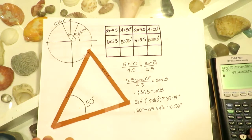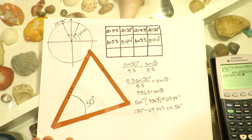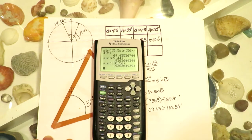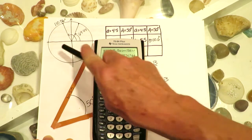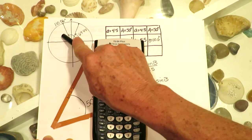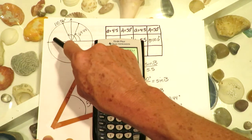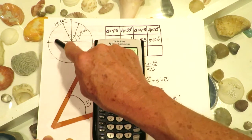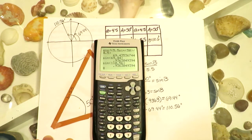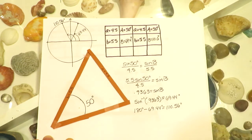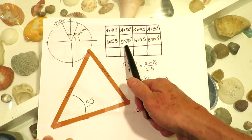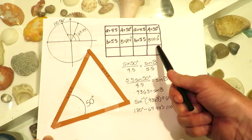Sine of 69.44 is equal to sine of 110.56 — notice we get the same value for sine for both of those angles. Where I obtained 110.56: take a half circle, or 180 degrees, and subtract the first answer to get the second angle with the same sine value. So 180 minus 69.44 gives 110.56. So angle B might be 69.44 degrees or it might be 110.56 degrees.